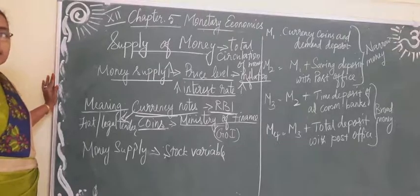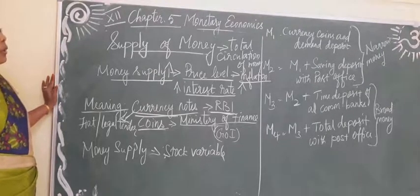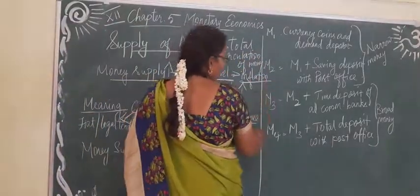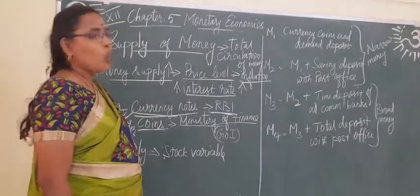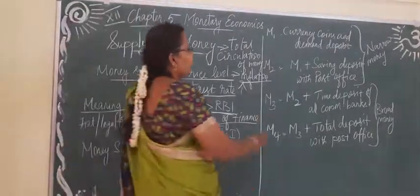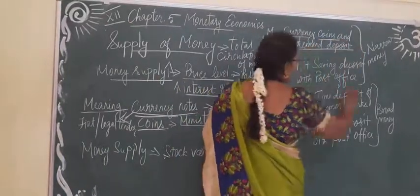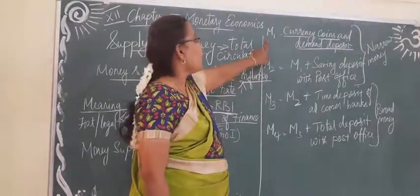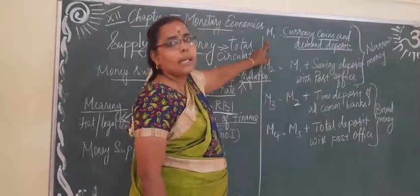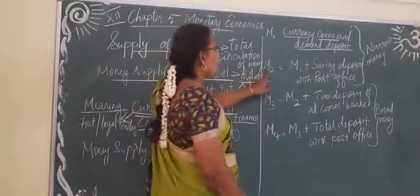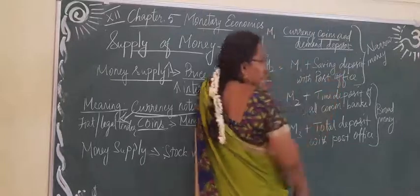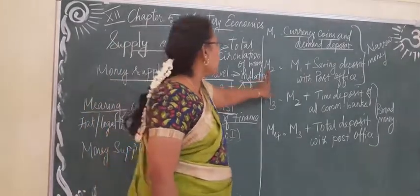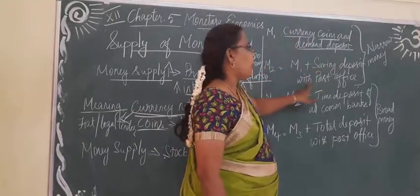Money is considered to be a stock value. Now we are going to see the components of money supply: M1, M2, M3, and M4. M1 includes currency, coins, and all the demand deposits. M2 includes M1 plus saving deposits in the post office. So M2 includes M1 and the saving deposits in the post office.